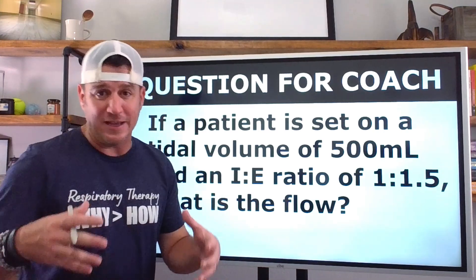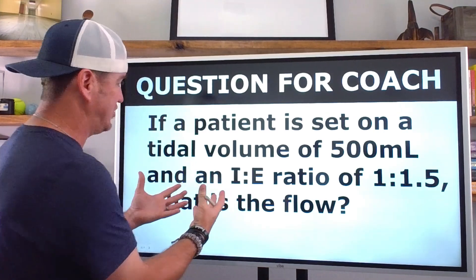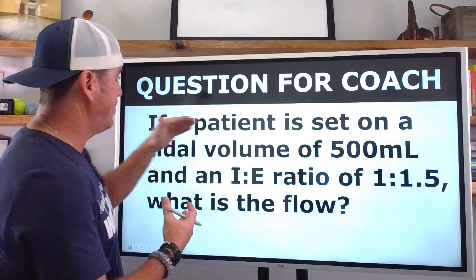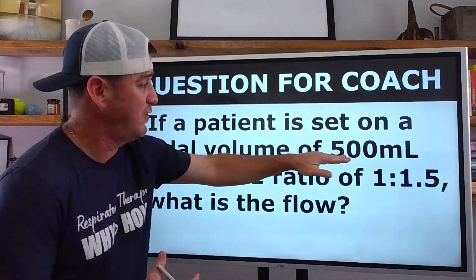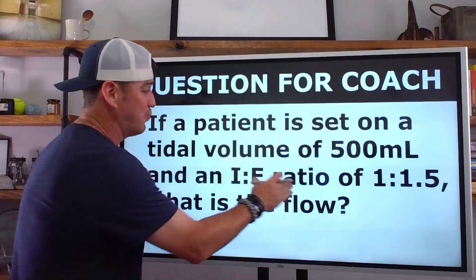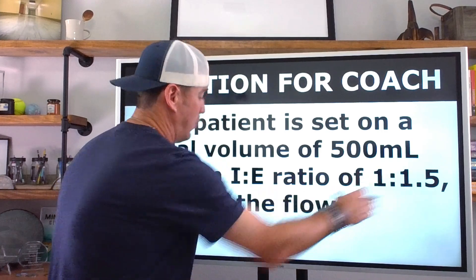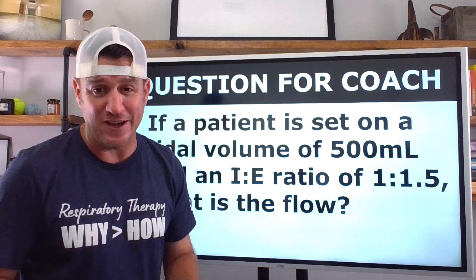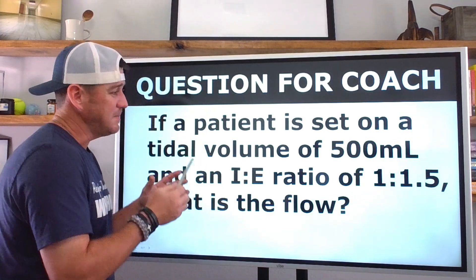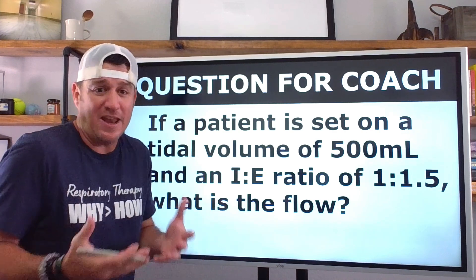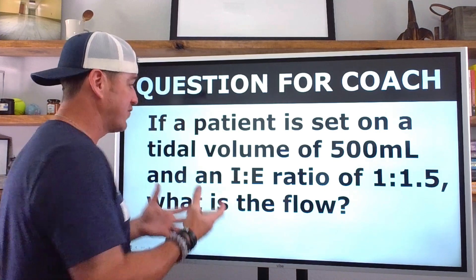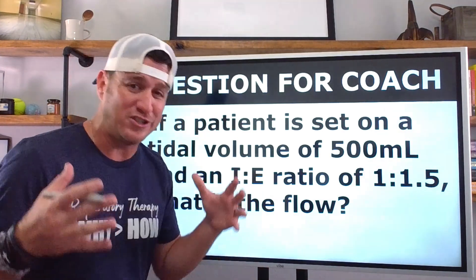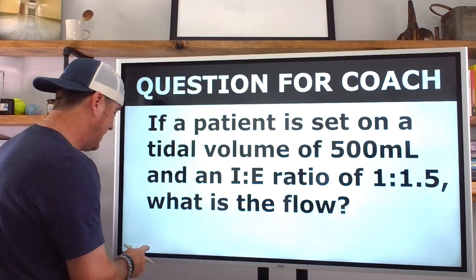This video comes from a question found in my comment section. Here's how it goes: if a patient is set on a tidal volume of 500 milliliters and an I-to-E ratio of 1 to 1.5, what is the flow? I'm going to show you how to calculate this in this video, but here's the problem — I need more information. I don't have enough information as it stands right now.